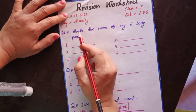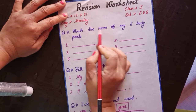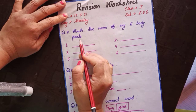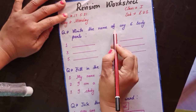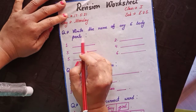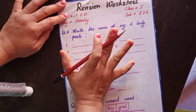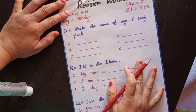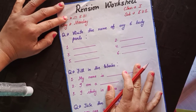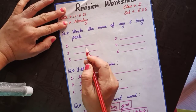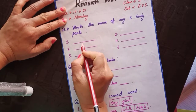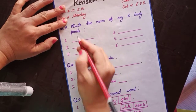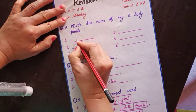First question is: write the name of any 6 body parts. Okay? Write the name of any 6 body parts. I have already written 10 body names for you — you have to learn them. You have to write here any 6 body parts. Alright? So start.